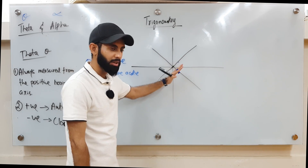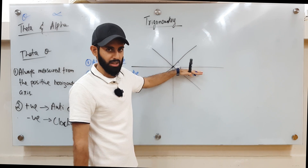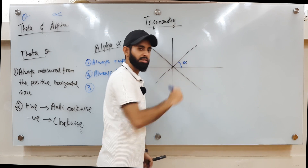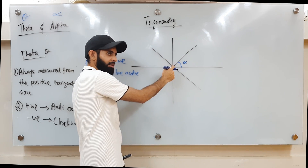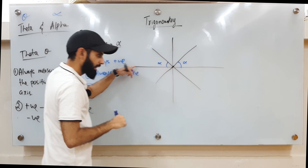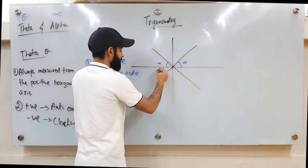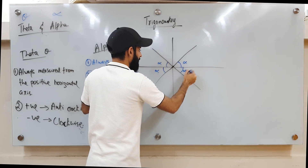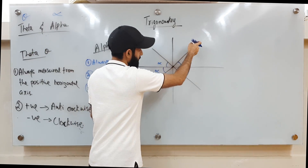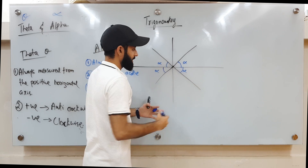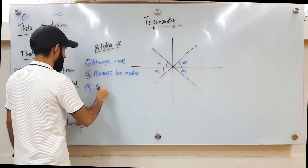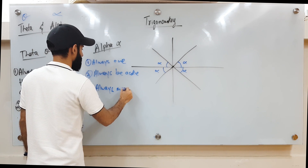Most importantly, alpha is the angle formed between any line and the horizontal axis. In each quadrant, alpha is the acute angle between the terminal line and the nearest horizontal axis. They may or may not be equal in value depending on whether you have a straight line or two separate lines.